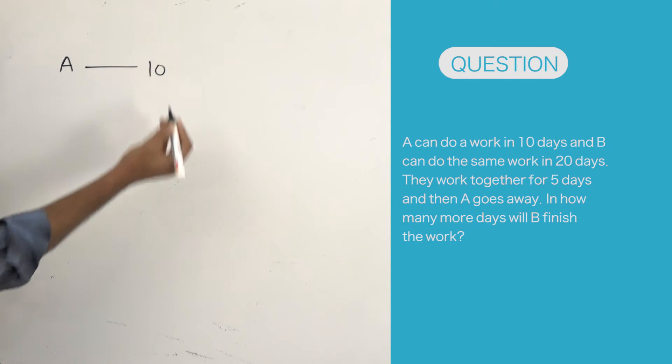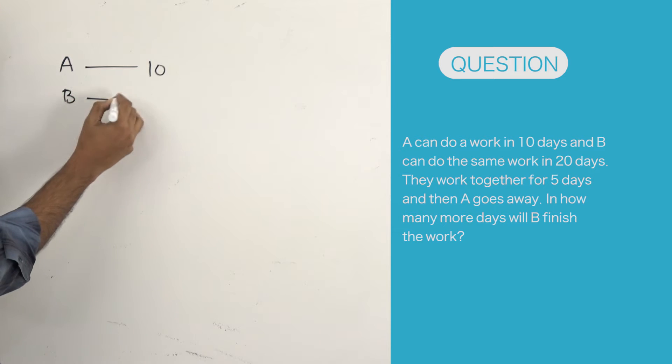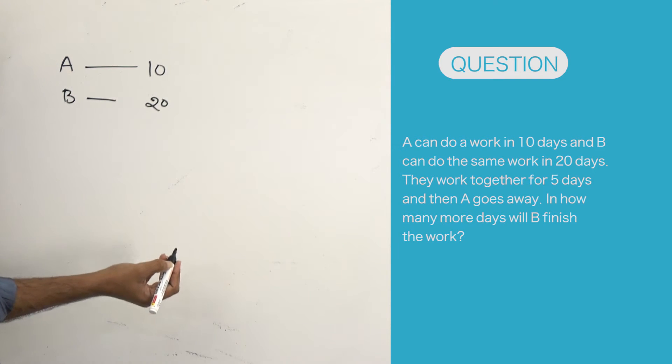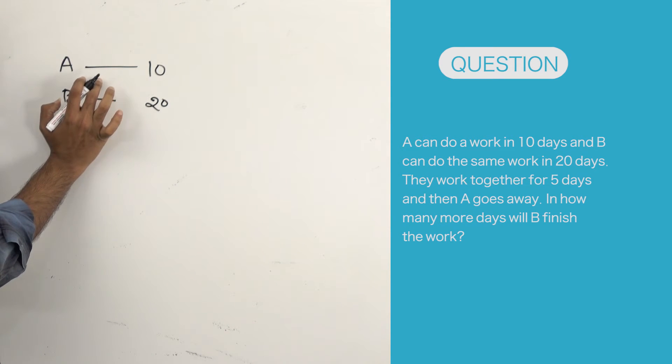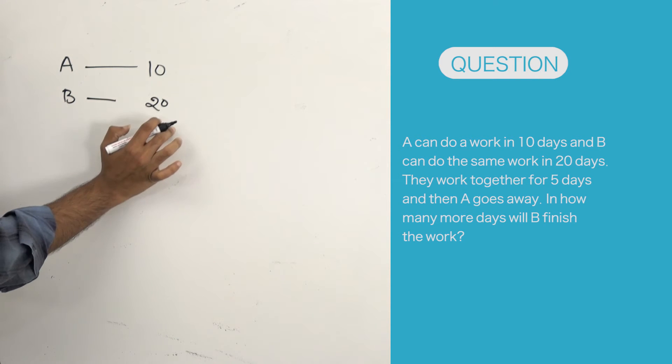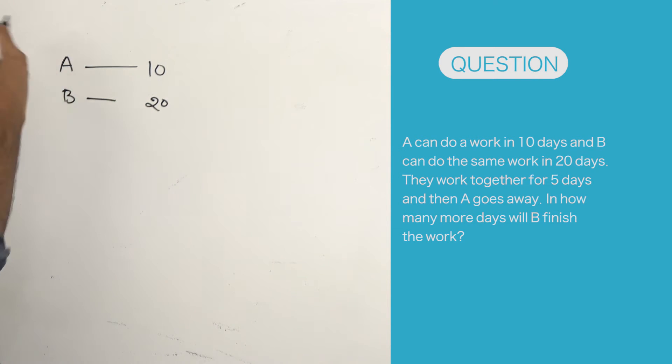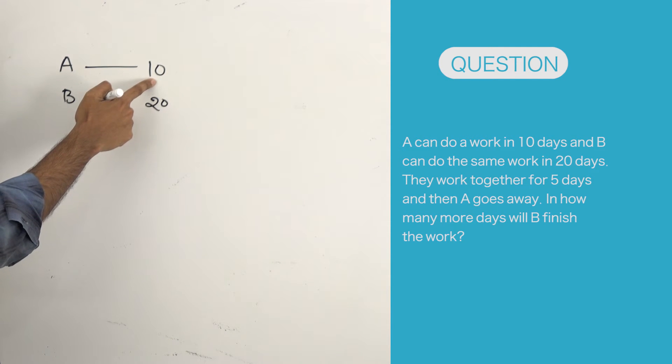If you look at the question, A can finish a work in 10 days whereas B can finish it in 20 days. That means A is twice as efficient as B, or if you want me to put it in the other way, A is equal to 2 B's, because he is able to finish it in just half of the time. So I'm just writing A is equal to 2 B's.